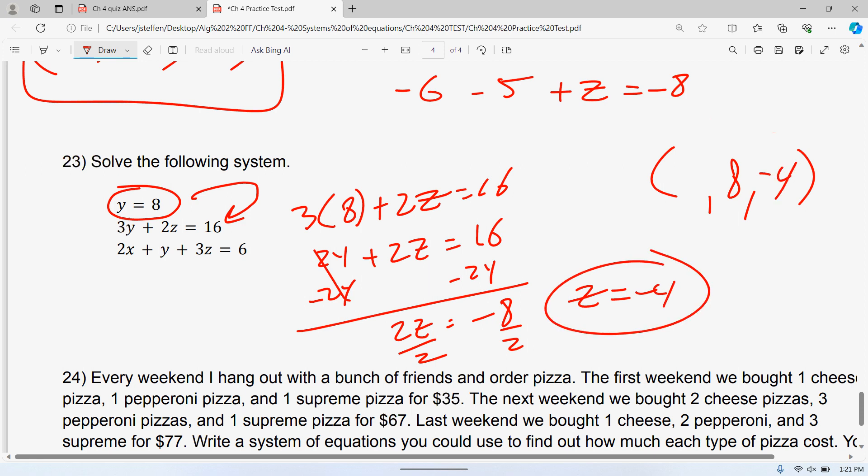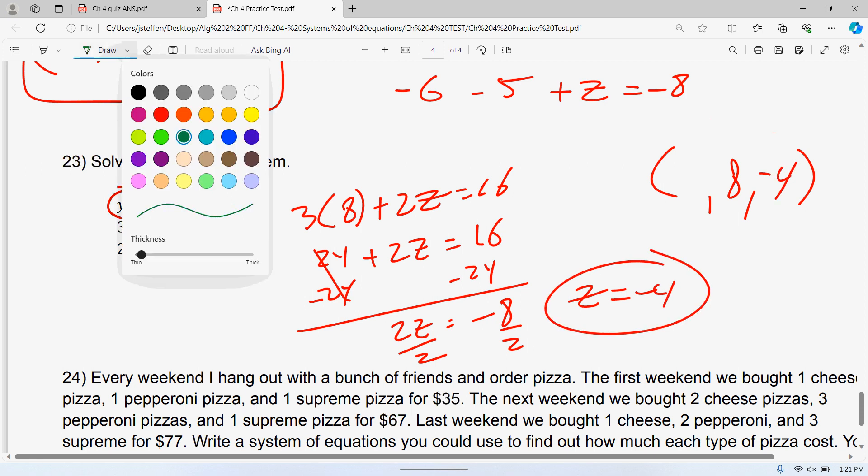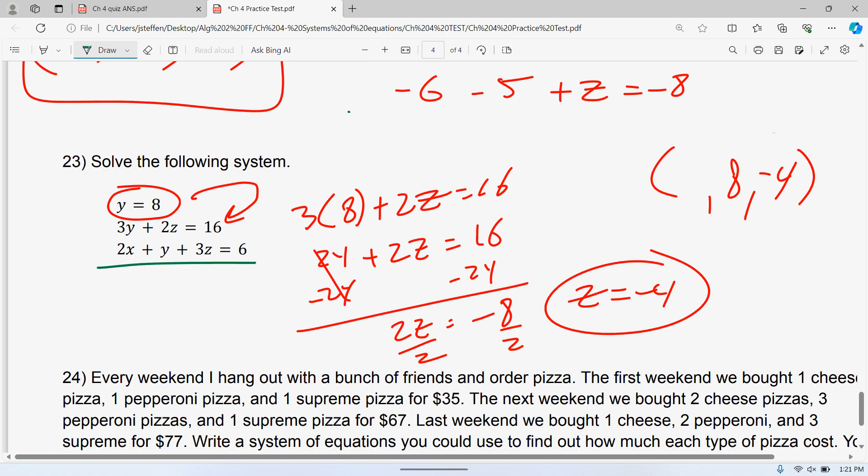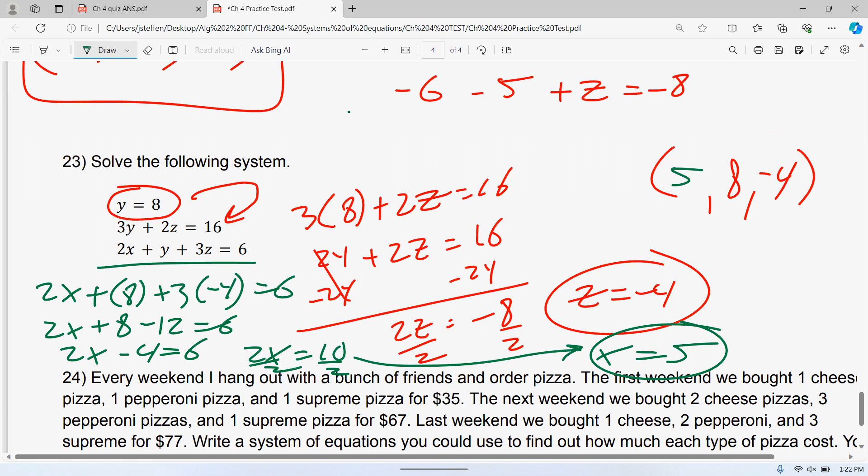My y, my z, and your x. You plug everything else into your last equation. So 2x plus 8 plus 3 times negative 4 is equal to 6. 3 times negative 4 is negative 12. 8 minus 12 is negative 4. If you add 4 to both sides, you get 2x is equal to 10. You divide both sides by 2. You get your x to be 5. Should be your answer for this other one.